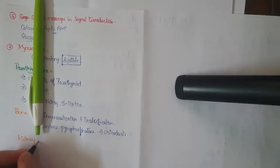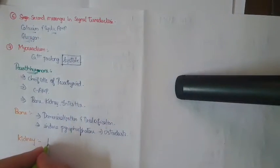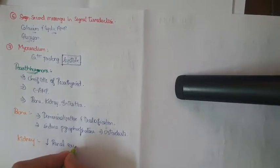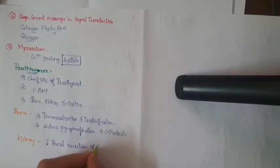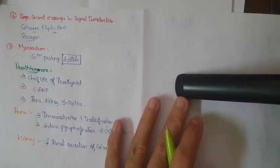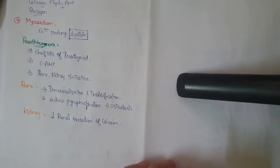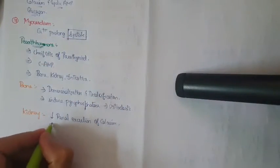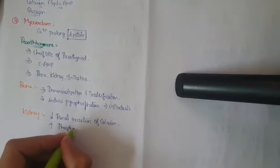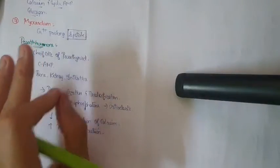In kidney, PTH is going to have a direct action. It is going to decrease the renal excretion of calcium, mainly by increasing the reabsorption of calcium from distal tubules. It is also going to increase the phosphate excretion.